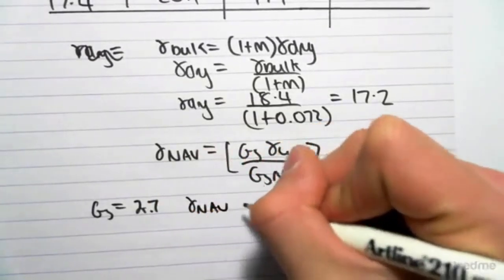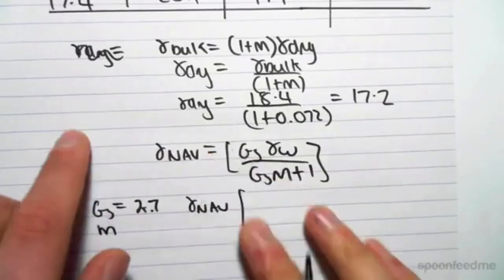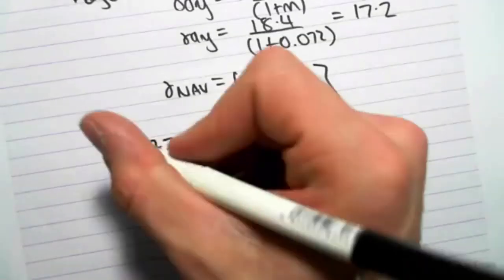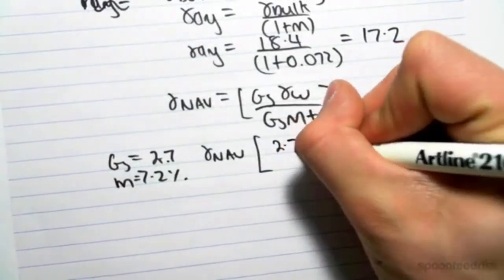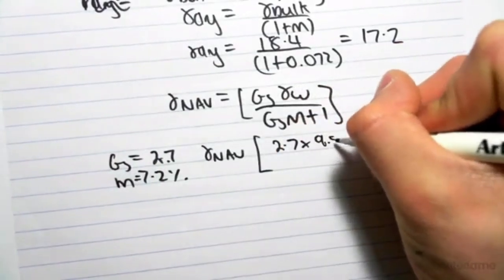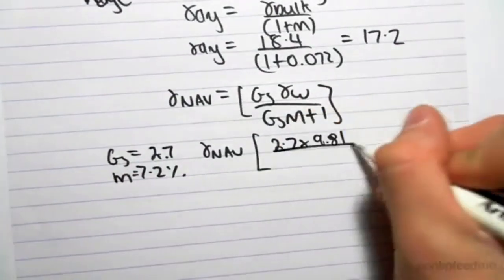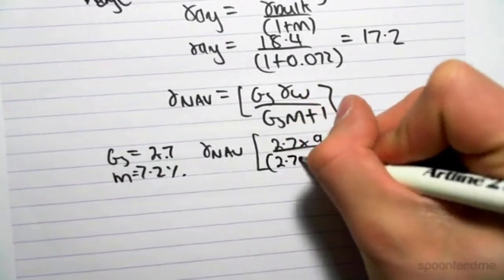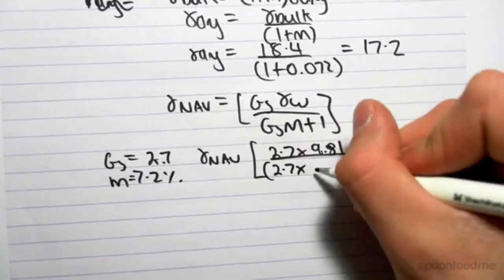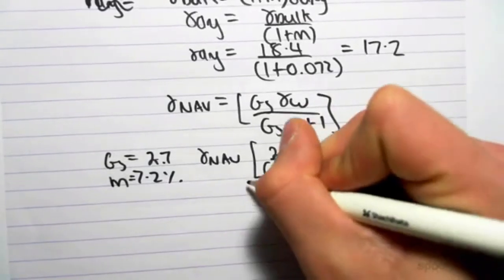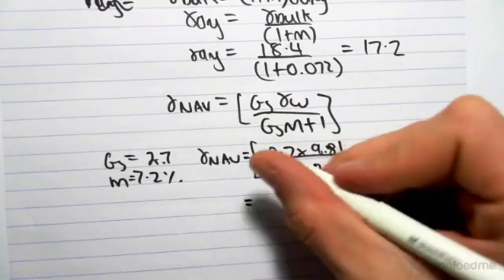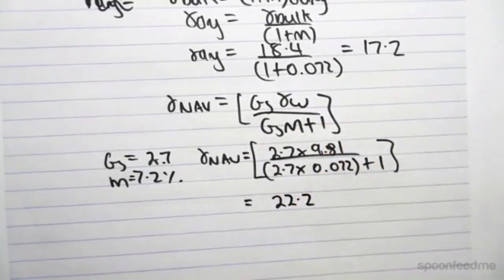The no air voids line at a moisture content, let's do the first one of 7.2%, would equal 2.7 by 9.81 divided by 2.7 by the moisture content, which is 0.072 plus 1. We would get that that value is 22.2.